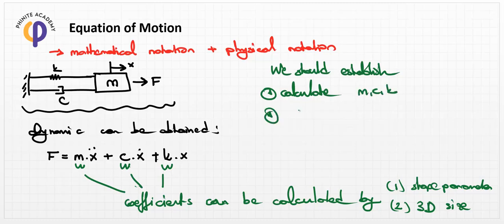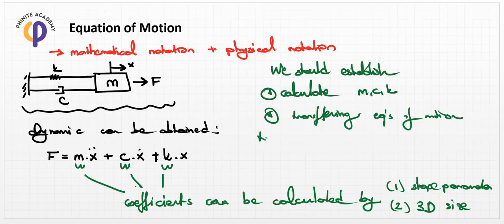If we want to model any system using these coefficients, we need to calculate the mass m, damping ratio c, and spring coefficient k. The main course objectives are: first, calculate m, c, and k; and second, transfer the equation of motion into transfer function form or state space representation.